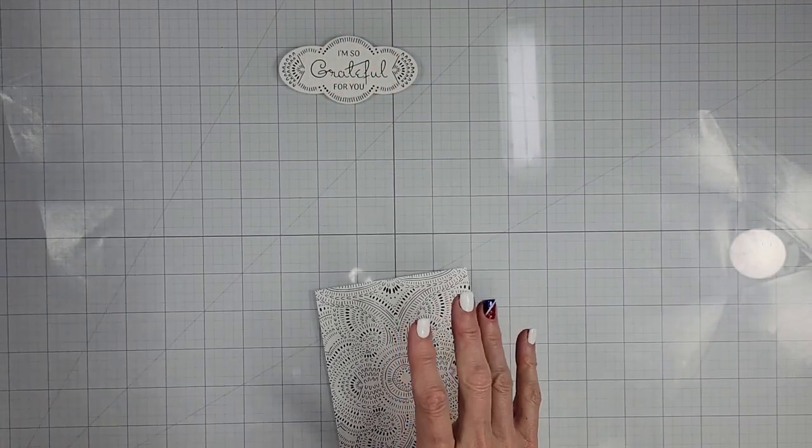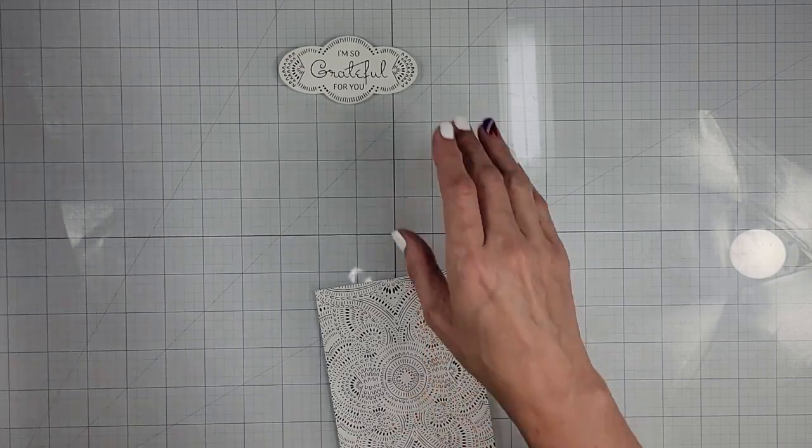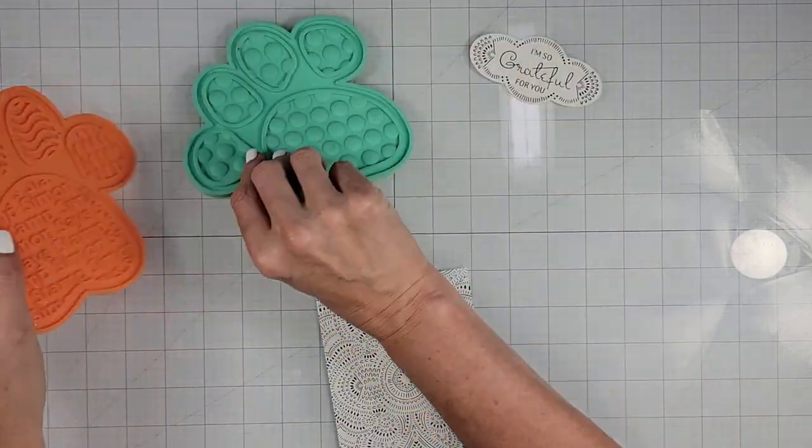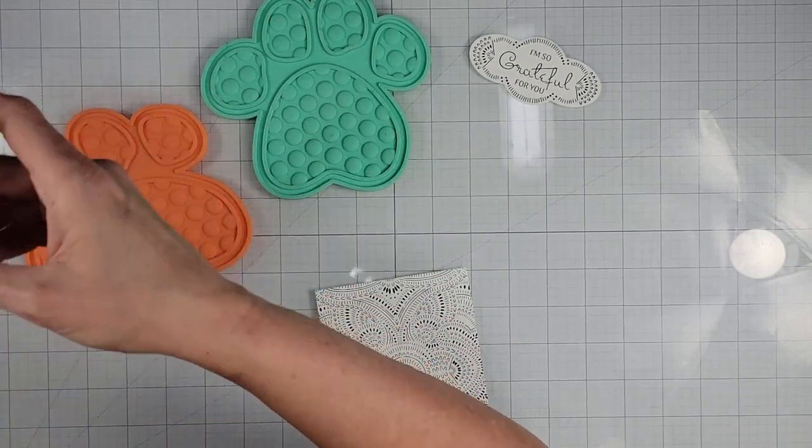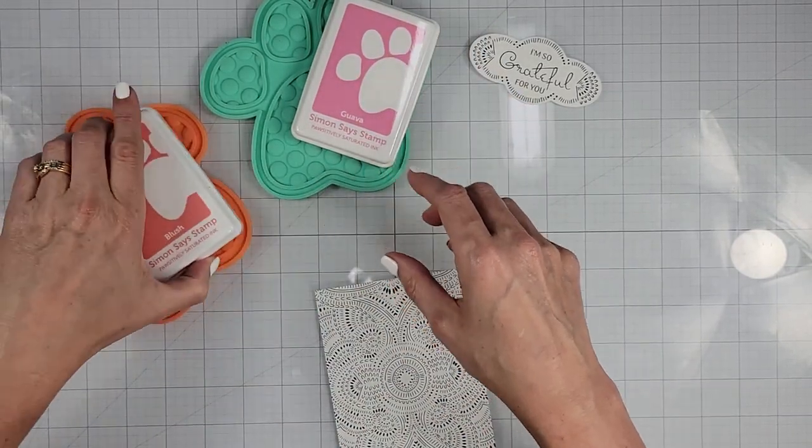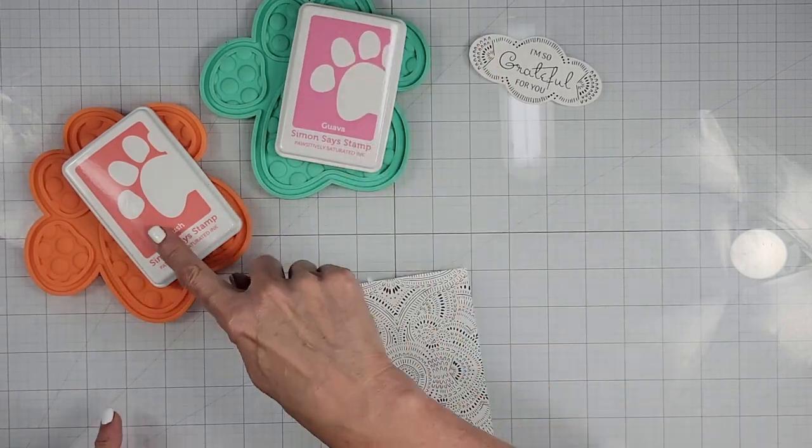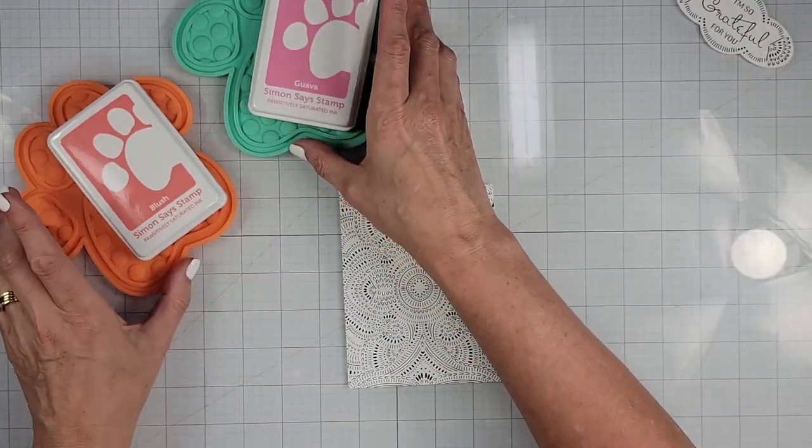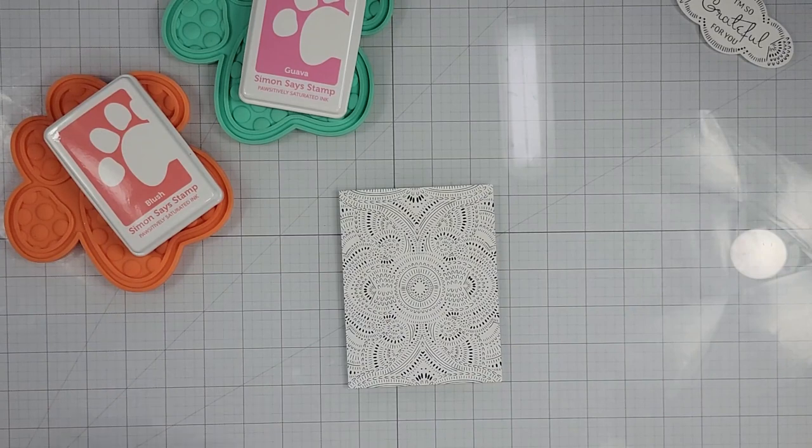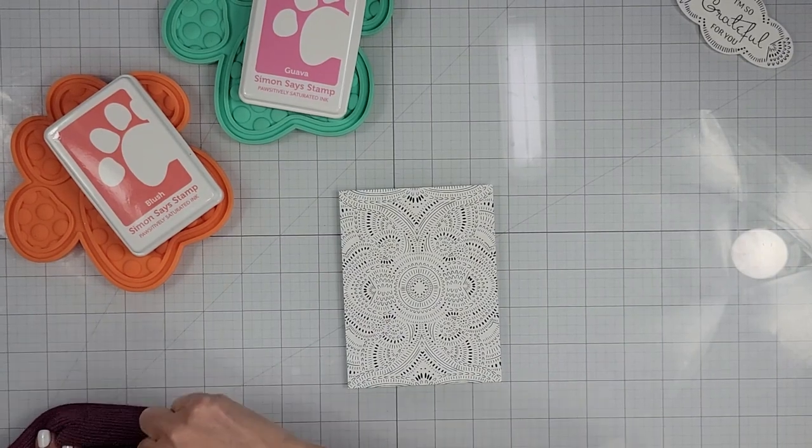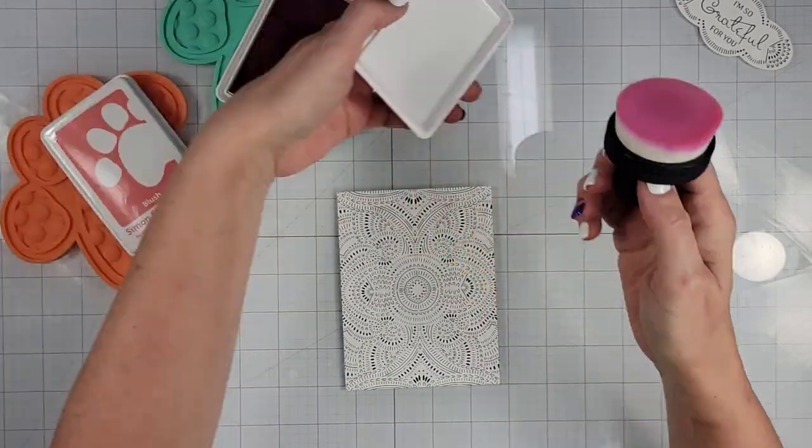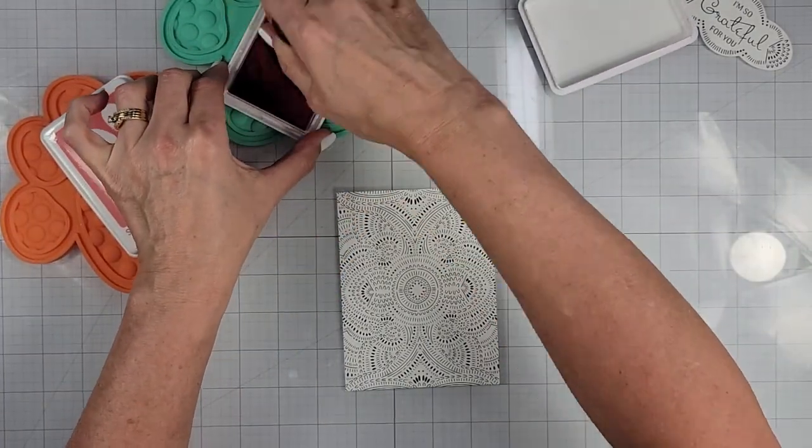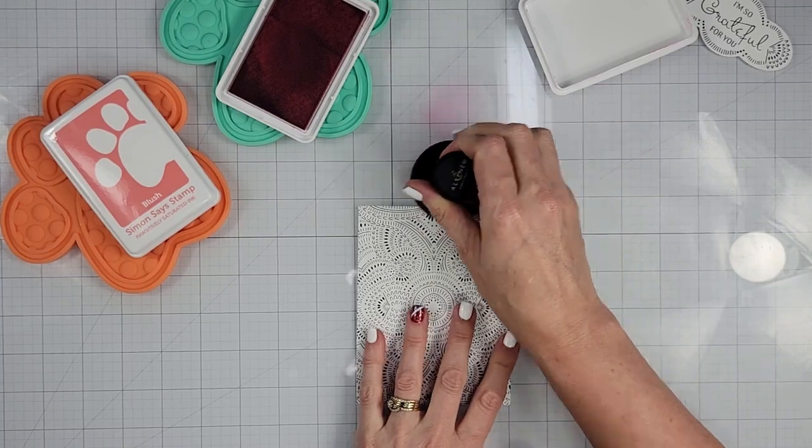So I'm going to quickly just do some ink blending. So I'm going to get me a couple of these little paws. That's what I like to use to hold my pads in place. And I'm going to start with Guava and blush. And I prefer Altenew's large blending brushes for something this size. So I am going to go diagonally.